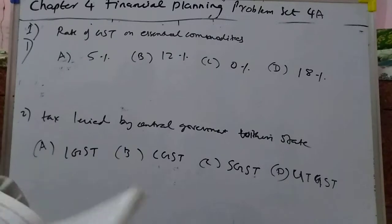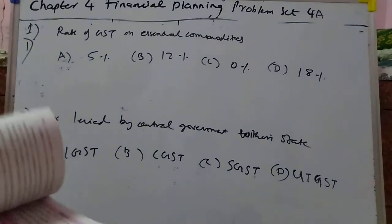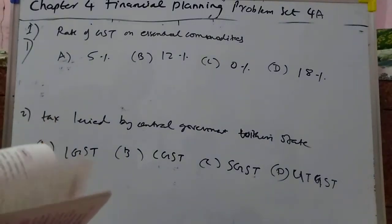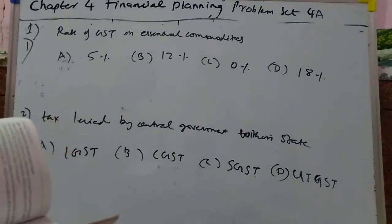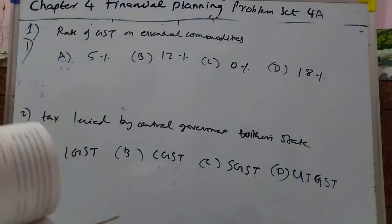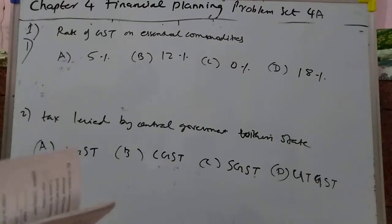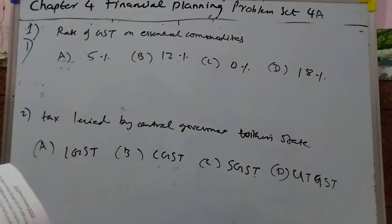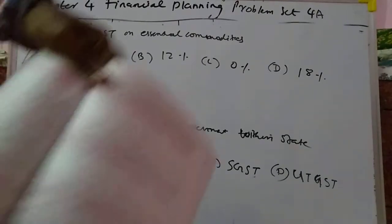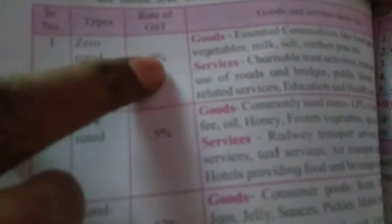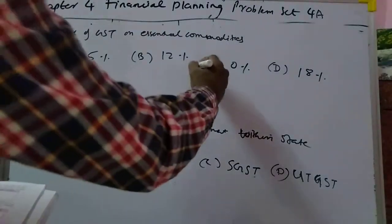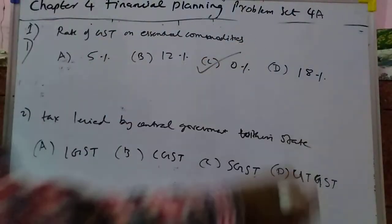Rate of Essential Commodities is 0%. It is given here also, you can check it. So you can go through this — 0% for Essential Commodities. So you have to simply mark 0.